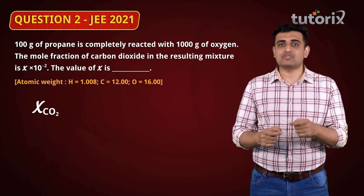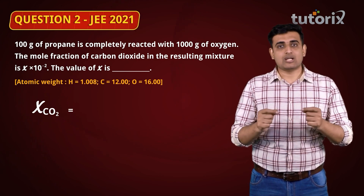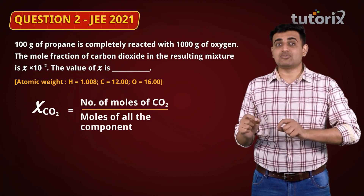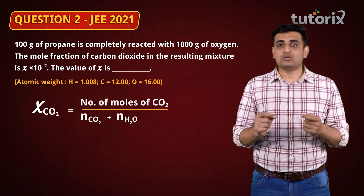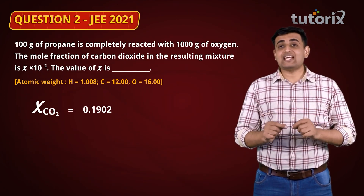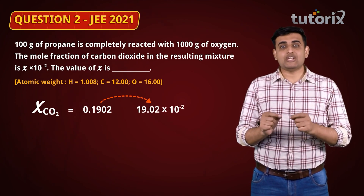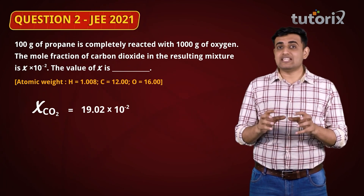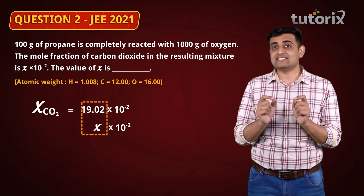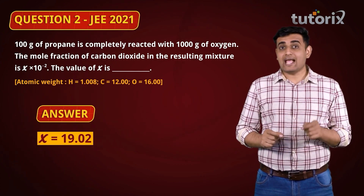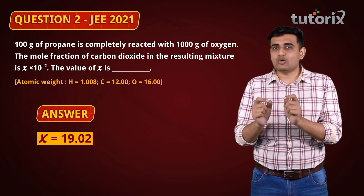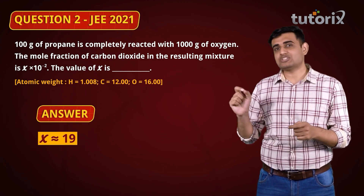Now we have the moles of CO₂, H₂O, and the remaining O₂ in the reaction mixture. The mole fraction of CO₂ = moles of CO₂ / (moles of CO₂ + moles of H₂O + moles of O₂). This equals 0.1902, or 19.02 × 10⁻². Equating with the given expression, x = 19.02. Since we need the nearest integer, the correct answer is 19.